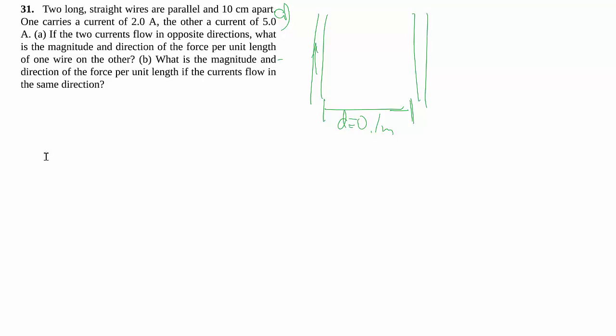In this case, they both have a current. This is 2.0 A, we'll call that I₁, and we'll call that I₂, 5.0 amps. In the case of Part A, they are going in the opposite direction, and they want the force per unit length.